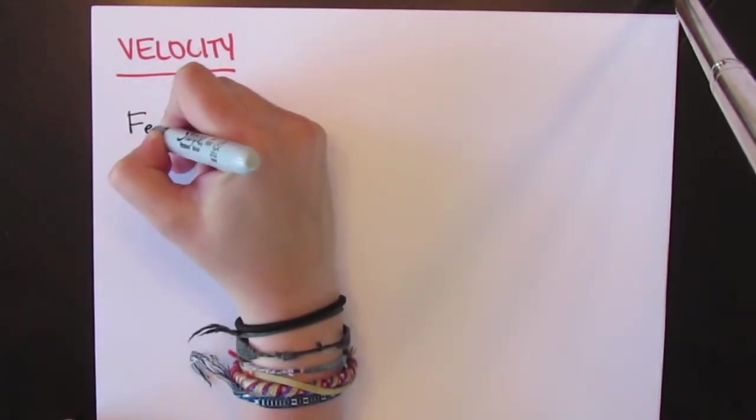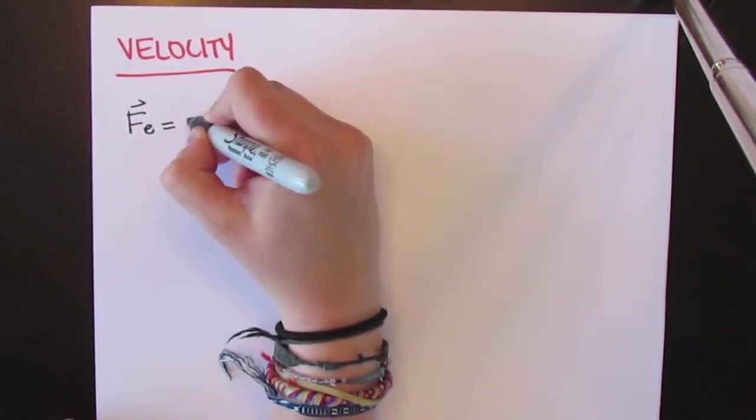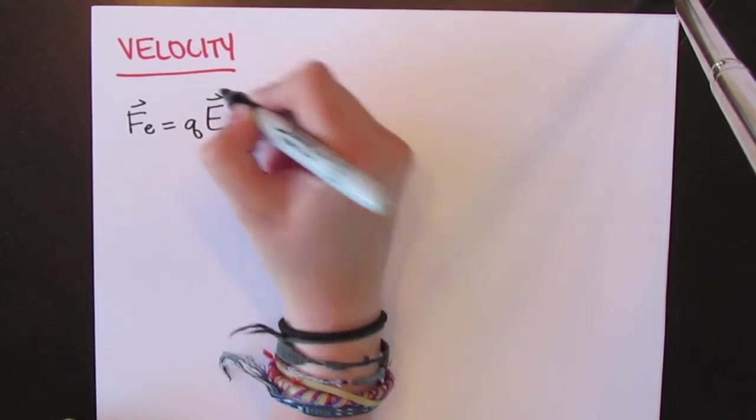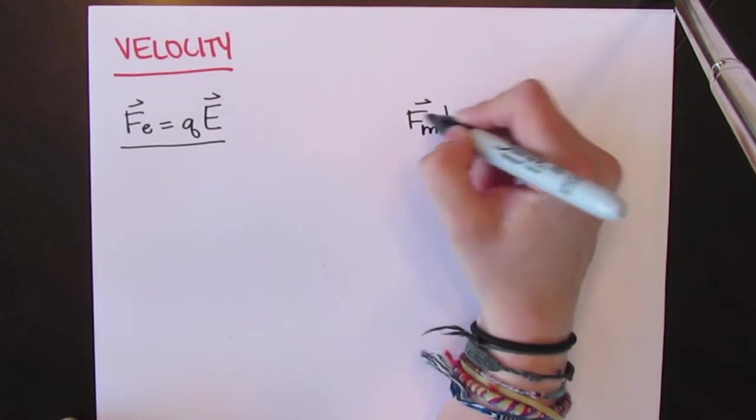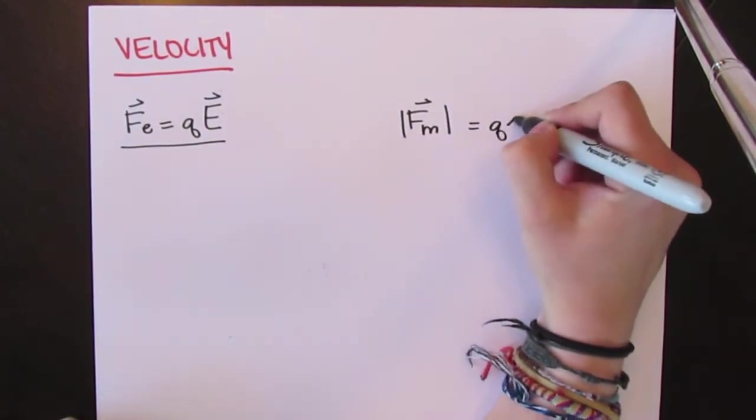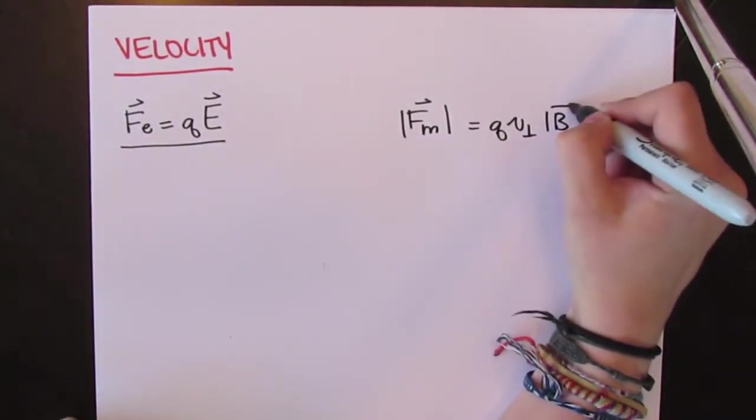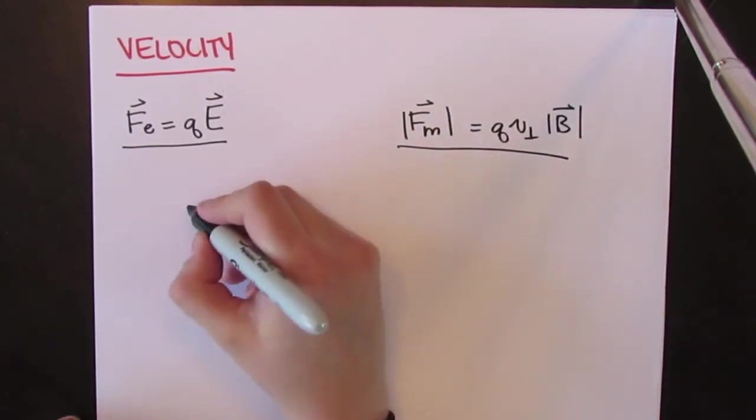He knew that the electric force experienced by the electron was equal to the charge of the electron multiplied by the electric field. He also knew that the magnetic force was equal to the charge of the electron multiplied by its velocity and the magnitude of the magnetic field, B.